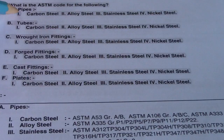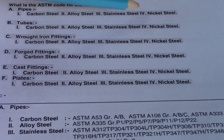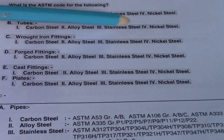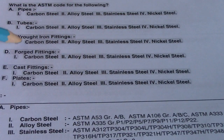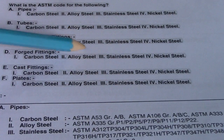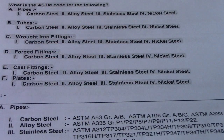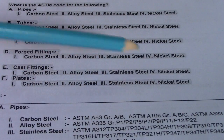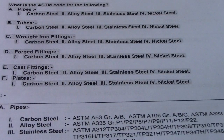For pipes, we have carbon steel, alloy steel, stainless steel, and nickel steel. For tubes: carbon steel, alloy steel, stainless steel, and nickel steel. For wrought iron fittings: carbon steel, alloy steel, stainless steel, and nickel steel. And also for forged fittings and plates — carbon steel, alloy steel, stainless steel, and nickel steel.